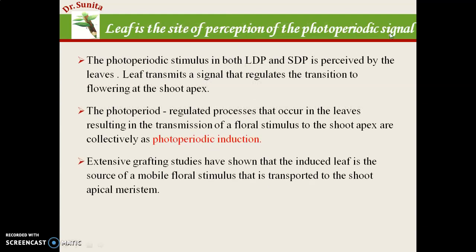The leaf is the site of perception for the photoperiodic signal, whether it is a long day plant or a short day plant — in both, perception of the photoperiodic signal occurs through the leaf. The leaf then transmits the signal to the flowering shoot apex, converting it to floral tissue. Photoperiodic induction refers to the collective processes regulated in leaves resulting in transmission of the floral stimulus to the shoot apex.